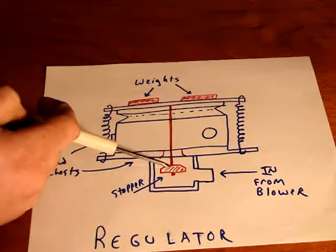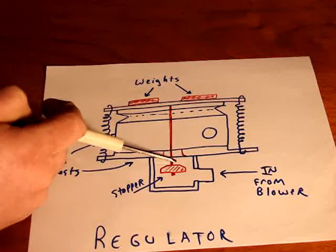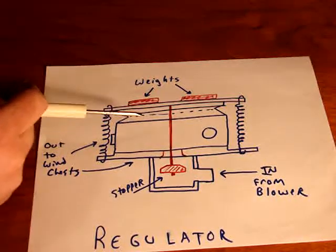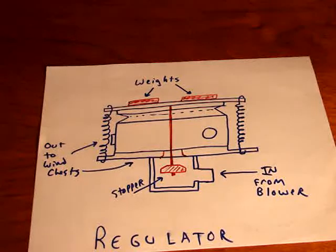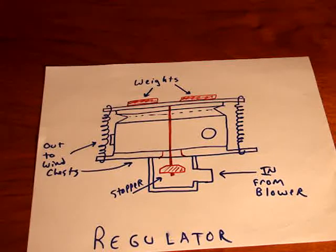This allows less or more air in through this port and maintains a fairly constant pressure of around five inches of water column. So that's how the regulator works.